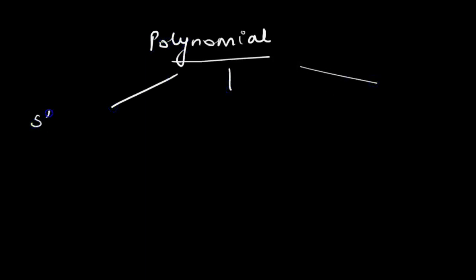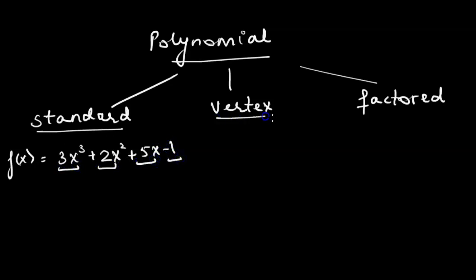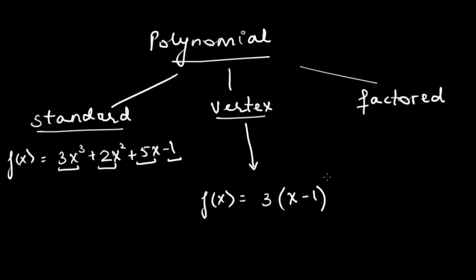A polynomial function can be written in three forms: standard form, vertex form, and factored form. The standard form is the general polynomial equation with all terms written separately — for example, f(x) = 3x³ + 2x² + 5x − 1. The vertex form is written as a(x − h)^n + k, where n is a whole number.